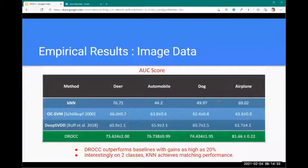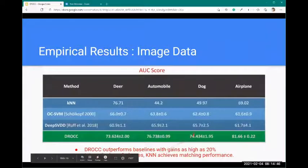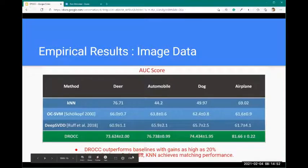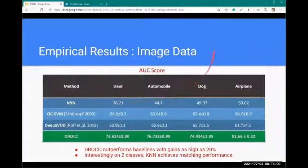In image data, we evaluated DROCC on the CIFAR dataset. We compared results with models like KNN, One-Class SVM, Deep SVDD, Isolation Forest. DROCC outperforms baseline by as high as 20% on most of the classes. Interestingly, on two classes, KNN achieves matching performance as DROCC.